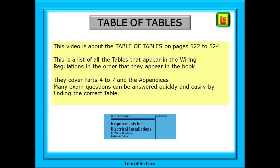This video is about the Table of Tables on pages 522 to 524. This is a list of all the tables that appear in the Wiring Regulations in the order that they appear in the book. Many exam questions can be answered quickly and easily by finding the correct table.